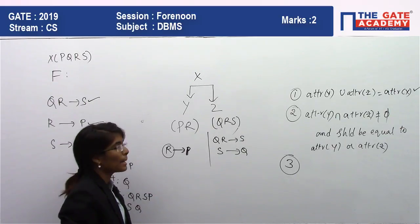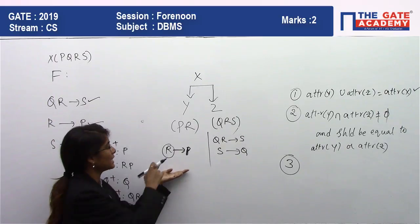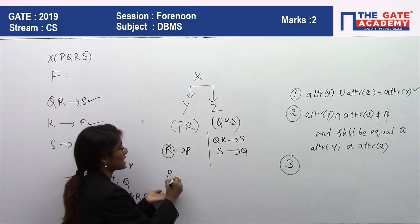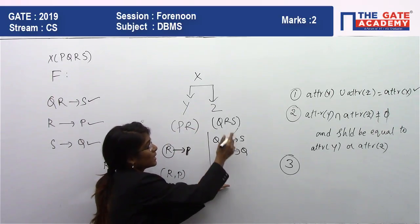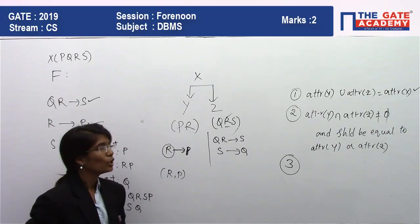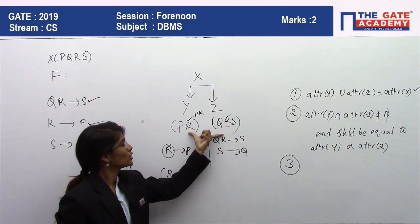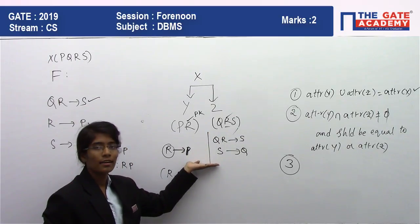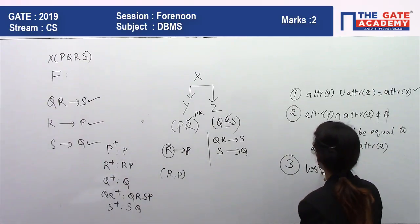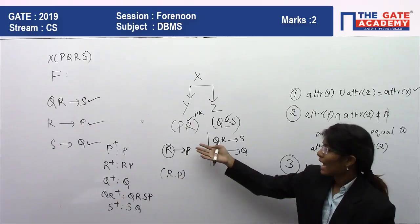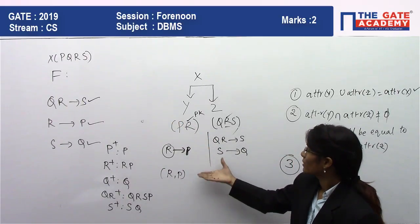Since R → P, R is acting as a primary key in Y, giving us all of PR. In Z, R acts as a foreign key. So all three conditions for lossless decomposition are satisfied, and we can confirm the decomposition is lossless.